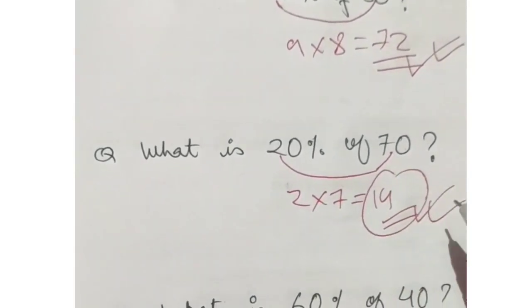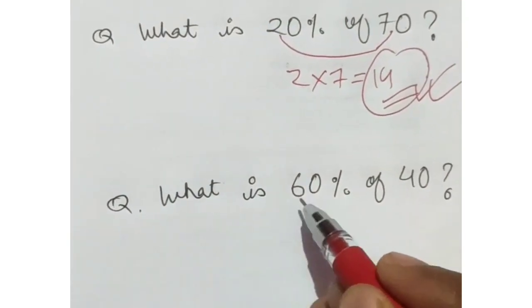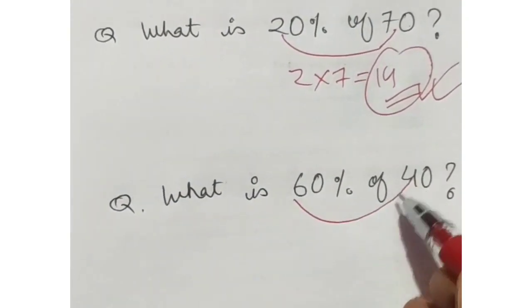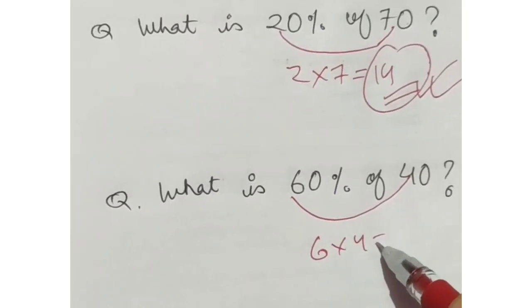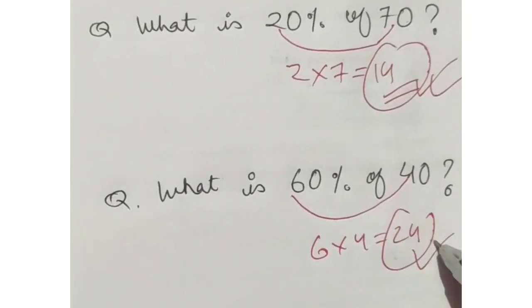Next, what is 60% of 40? 6 times 40, 24, answer 24.